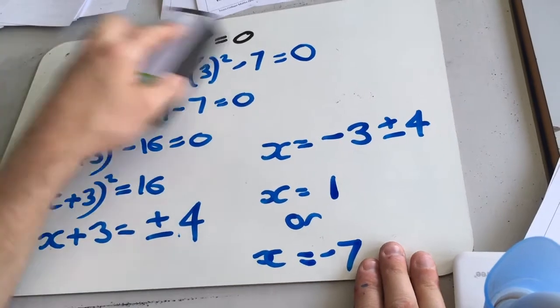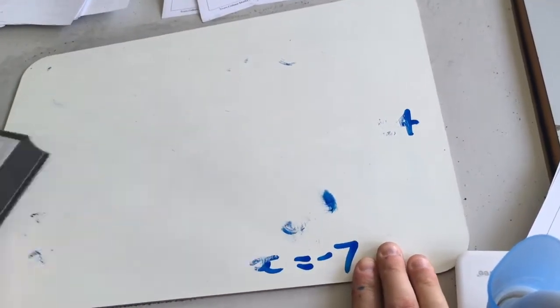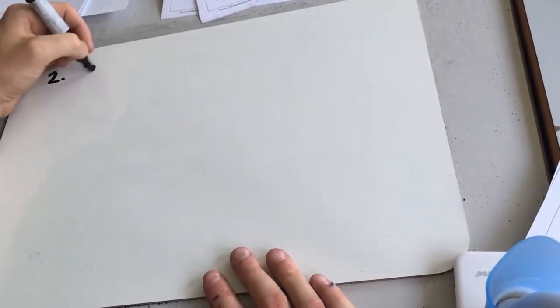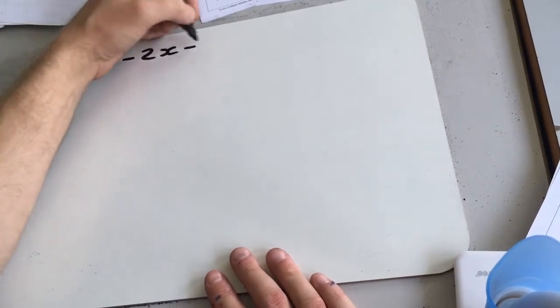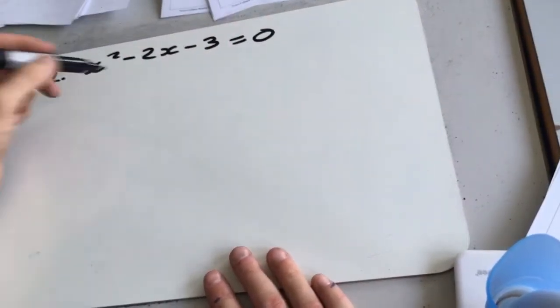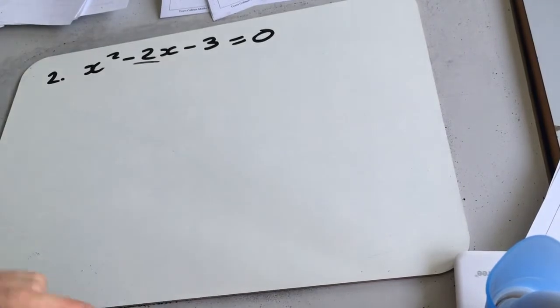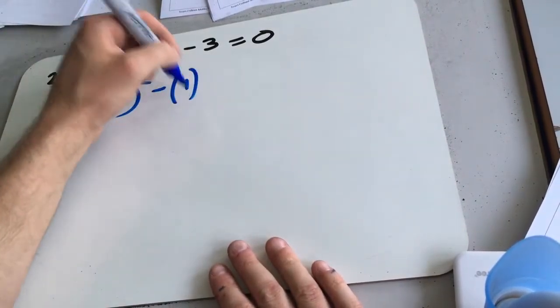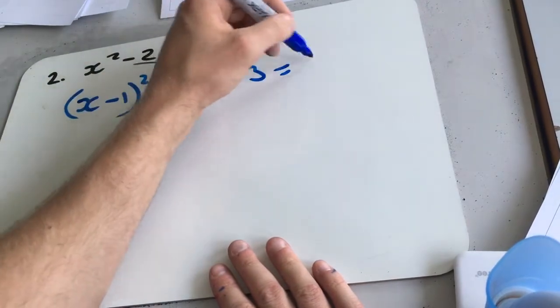Right, two more like this. So question 2, x squared minus 2x minus 3 equals 0. So complete square in this bit, ignore that bit. So x minus 1 squared minus 1 squared minus 3 equals 0.